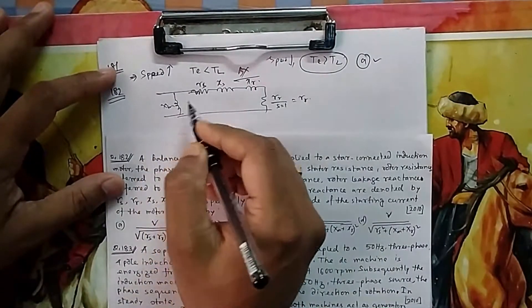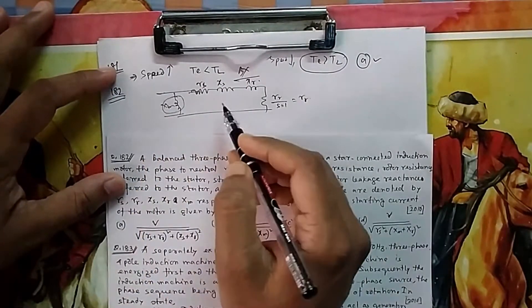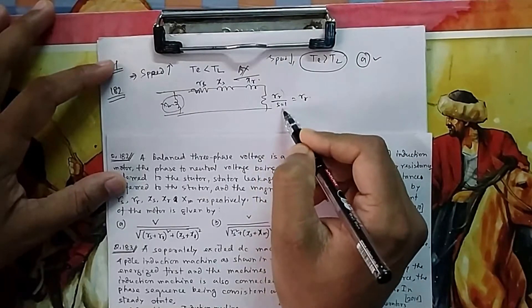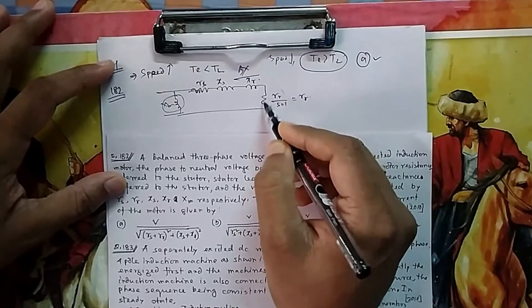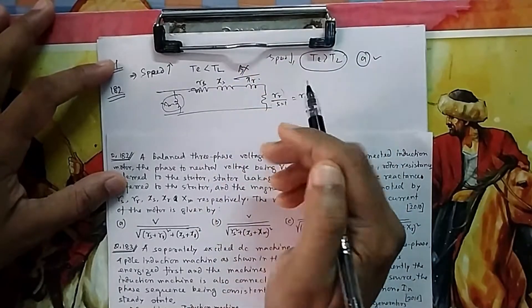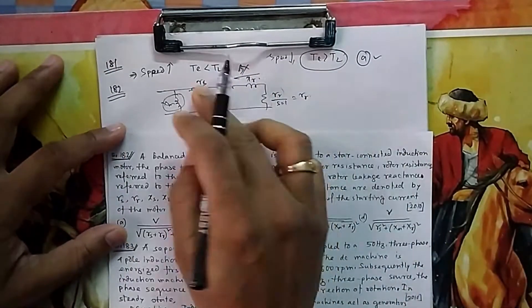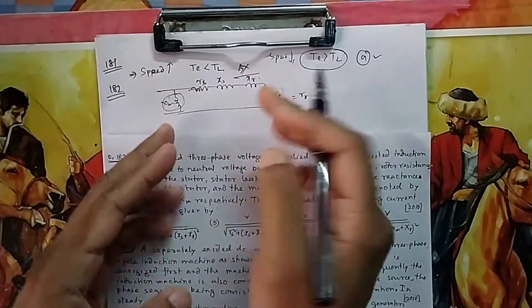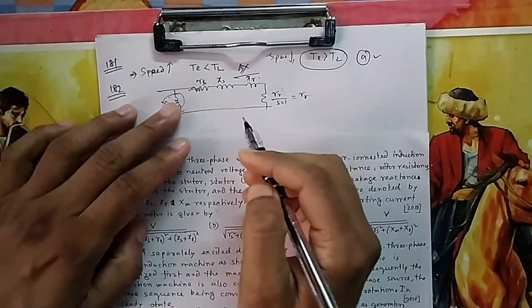This current is very low compared to starting current because starting current is very high since S is 1. Once S starts decreasing, this value becomes very high. But starting current is very high, so this magnetizing current doesn't match, you can neglect XM.